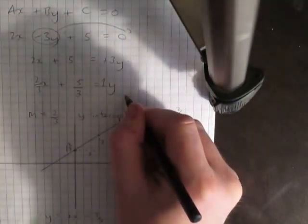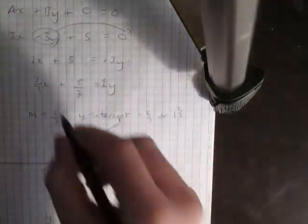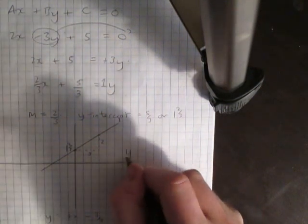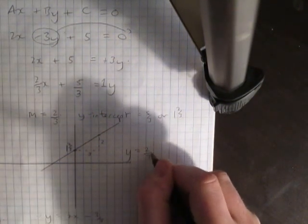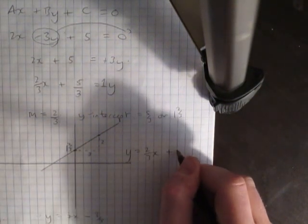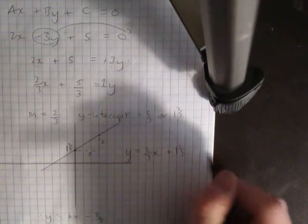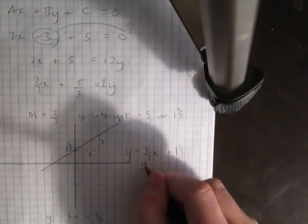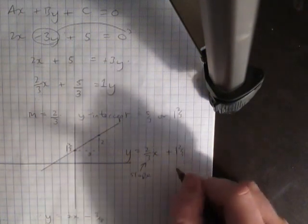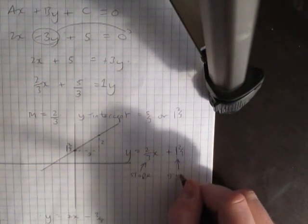Now that this is in the form mx plus b, I could rewrite this as y equals 2 thirds x plus 5 thirds or 1 and 2 thirds, where this number here is the slope and this number here is the y-intercept.